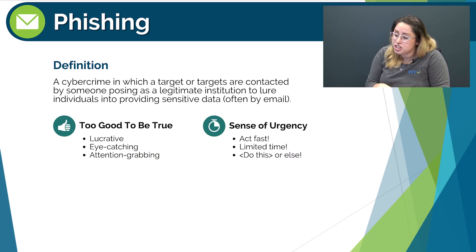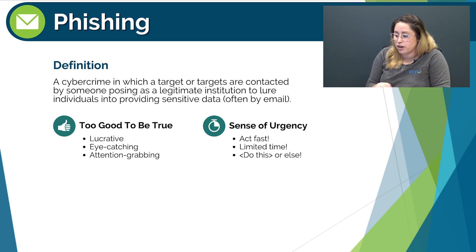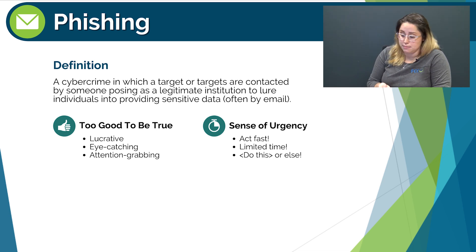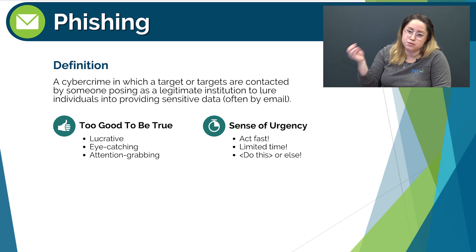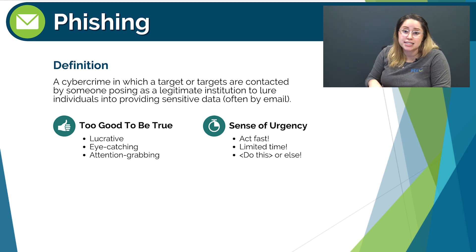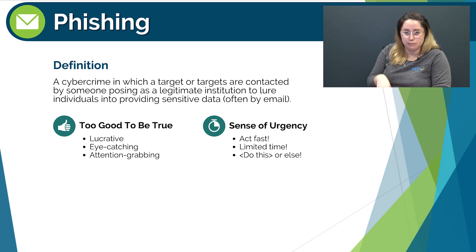Let's chat about phishing. Phishing is a cybercrime in which a target or targets are contacted by someone posing as a legitimate institution to lure individuals into providing sensitive data, often by email. Phishing is both a broad concept and it can be used to specify email phishing in particular. So types of phishing would include vishing and smishing, but you can call email phishing just phishing as well.